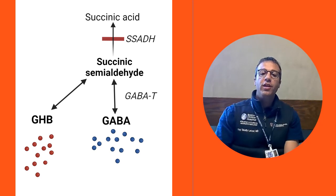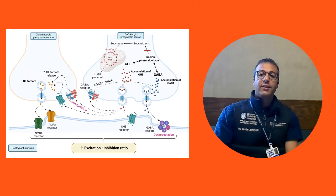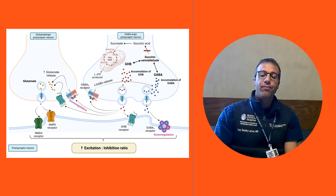SSADH deficiency results in the unique phenomenon of accumulation of hyperphysiologic concentrations of GABA and other GABA-related neurotransmitters. Since GABA is the brain's main inhibitory neurotransmitter, excess concentrations of it can disrupt the brain's excitation-inhibition ratio.